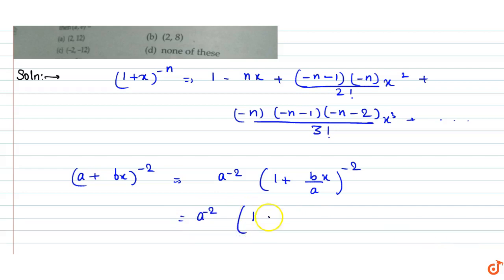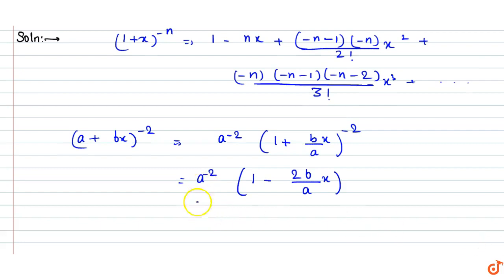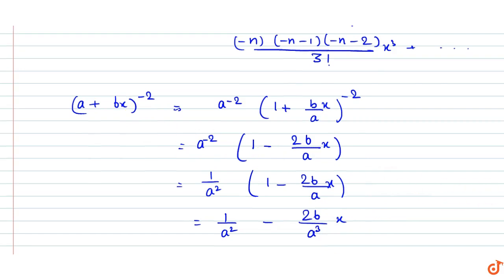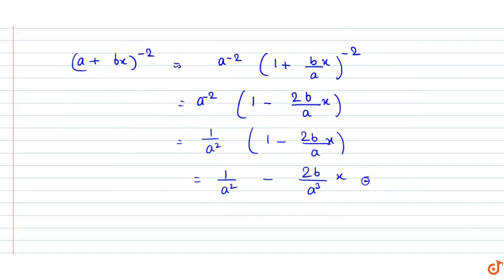Taking out 1/a² from the bracket, the expansion becomes: 1/a² minus (2b/a³)x and so on. This expansion is equal to 1/4 minus 3x.